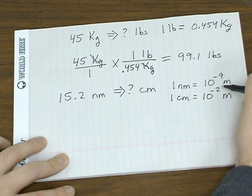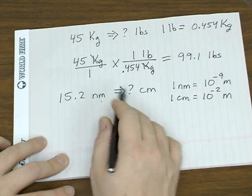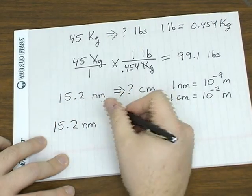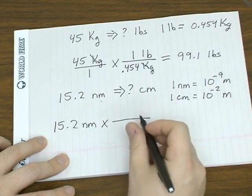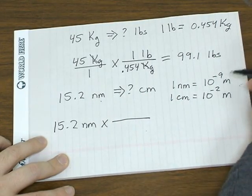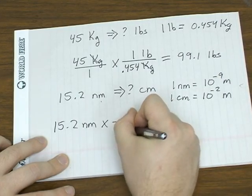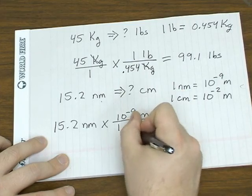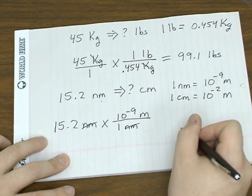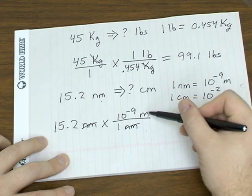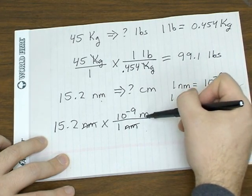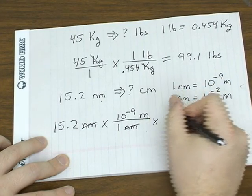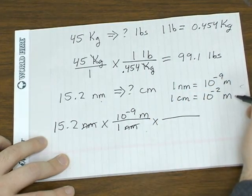So we'll use these two conversion factors to go between these two units. So we start with the unit we're given, which is nanometers. We can use our first conversion factor to cancel out the nanometer unit. Again, we'll put nanometer on the bottom, so it cancels out. Now, if we stop here, we're going to be in units of meters. But we want to convert meters to centimeters, because that's the unit we're looking for.